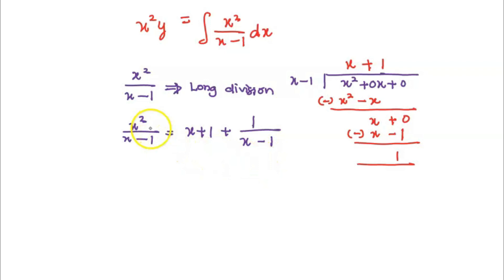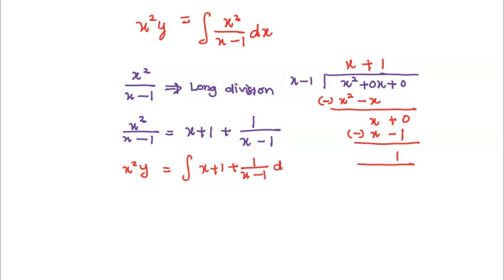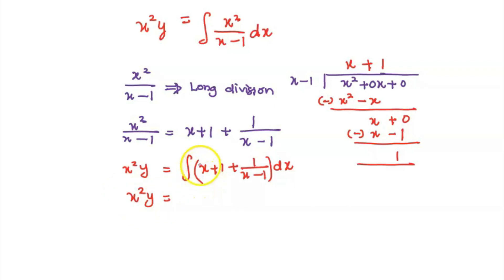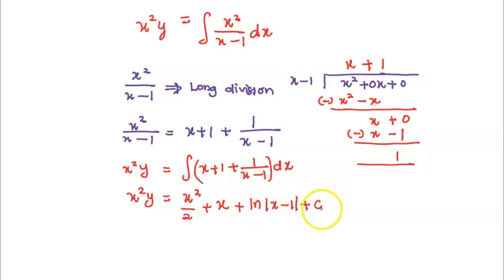Once we have x squared over x minus 1 in this form, we rewrite the integral. So x squared y equals the integral of x plus 1 plus 1 over x minus 1 dx. Integrating: the integral of x is x squared over 2, the integral of 1 is x, and the integral of 1 over x minus 1 is ln|x minus 1|. Do not forget the constant c.